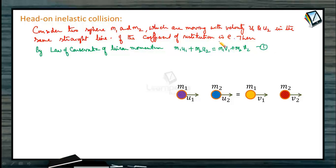Since the coefficient of restitution is e, we can also use Newton's law of restitution. E is equal to velocity of separation by velocity of approach. So here, what is the velocity of separation? Velocity of separation is v2 minus v1. Velocity of approach is u1 minus u2. Velocity of approach u1 should be greater than u2, so u1 minus u2. Velocity of separation, v2 is greater than v1.